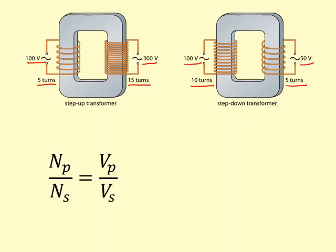This gives our first equation, which is the ratio of the turns in the primary to the turns in the secondary is the same as the ratio of the voltage in the primary to the voltage in the secondary.